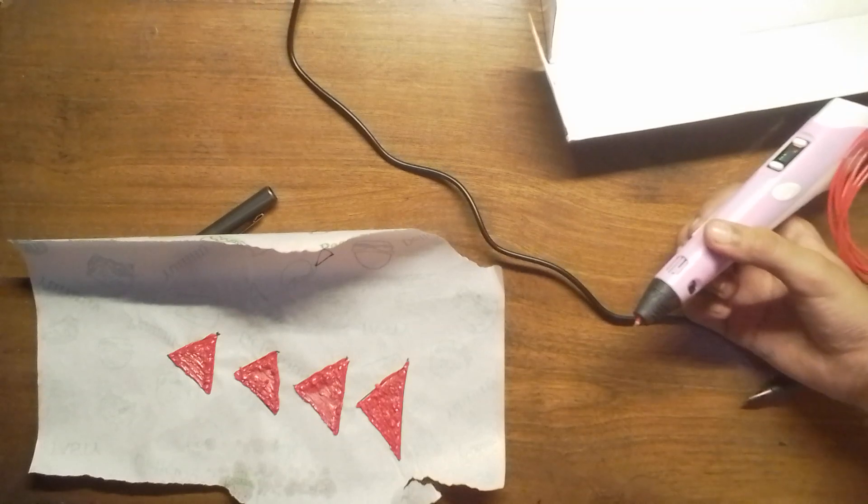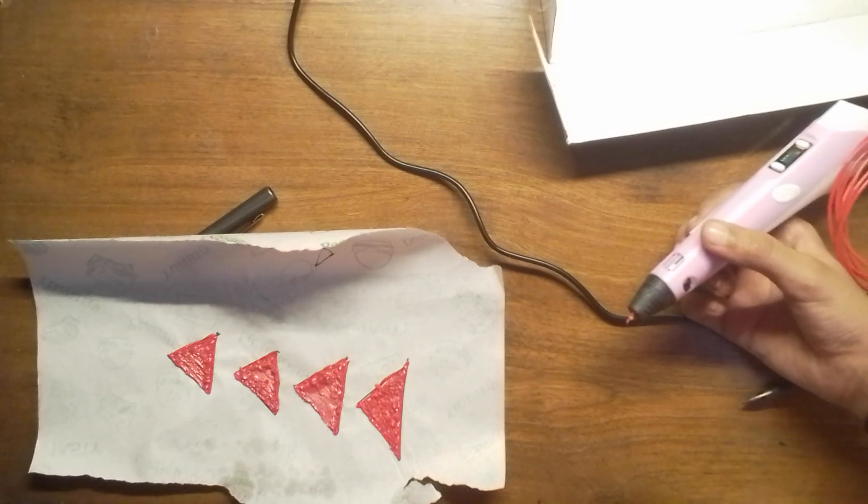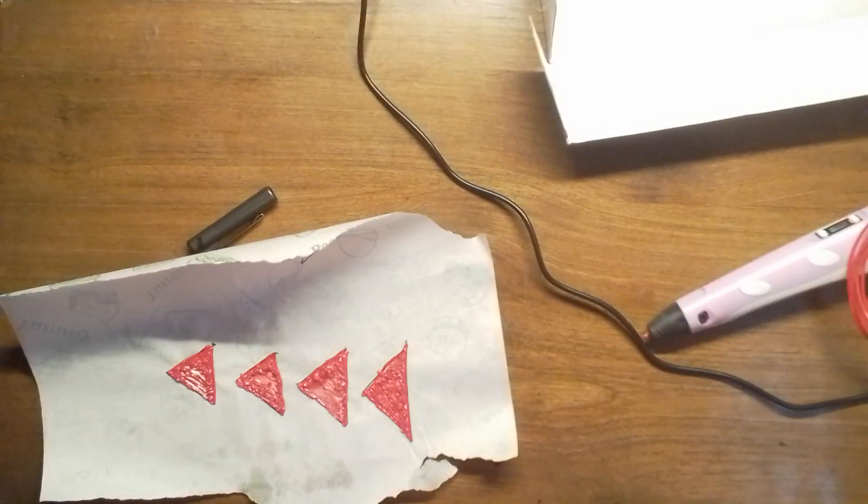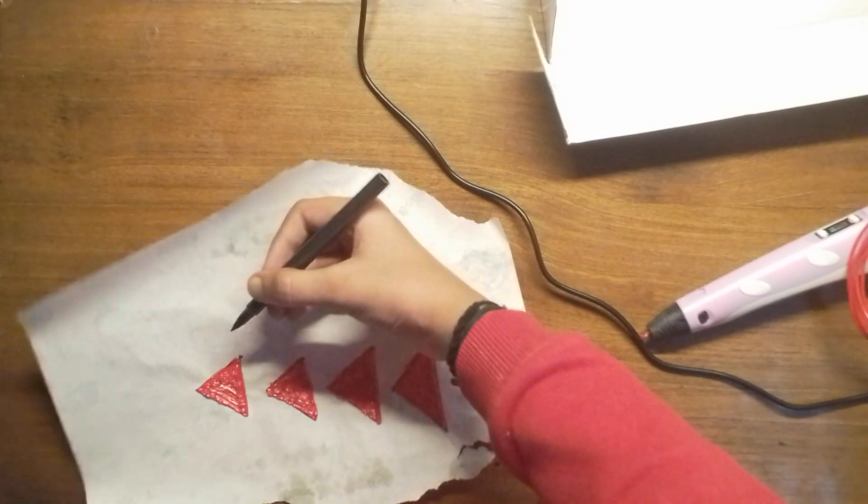As you can see, all the triangles are done. Now it's time to join them, but I'll wait a few moments so they can dry nicely. Now I'm going to remove this. You can either do it with a pen or with your hand. I'm just going to zoom in.